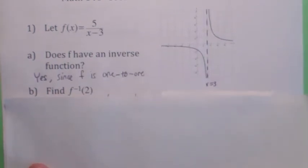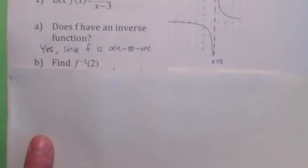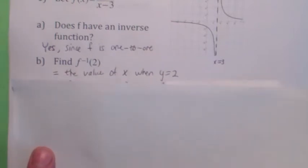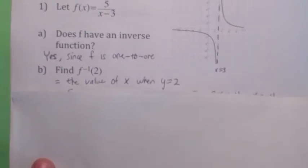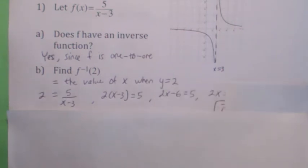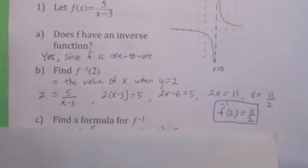How would you find f inverse of 2? Remember, f inverse of 2 is the value of x when y equals 2. We're not finding the inverse function — let's just use the function itself to find it. Set the y coordinate equal to 2 and find x. You cross multiply, use the distributive law, add 6 to both sides and solve for x. You get x equals 11 halves. So f inverse of 2 equals 11 halves.